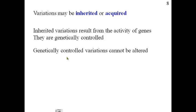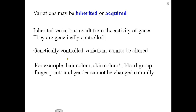Genetically controlled variations cannot be changed. Blood type, for example — you cannot change your blood type. Eye color — you can't truly change your eye color, even if you use colored contacts. Hair color can be dyed, but you can't permanently change it; it is genetic. Hair color, skin color, blood group, fingerprints — all genetic, and you can't change them. Your gender is also a genetic trait that cannot naturally be changed.